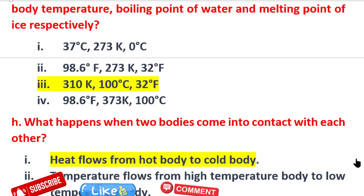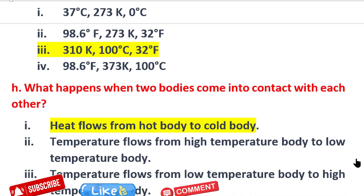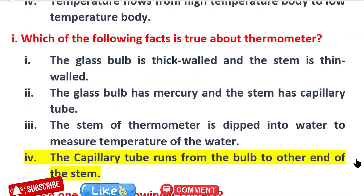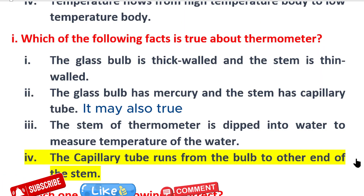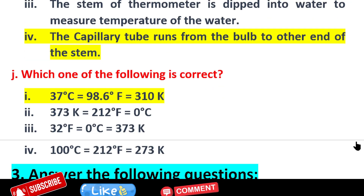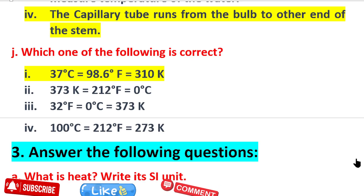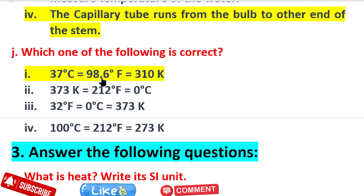What happens when two bodies come into contact with each other? Heat flows from the hot body to the cold body — that is very important. Which of the following facts is true about a thermometer? The right answer is option IV: the capillary tube runs from the bulb to the other end of the stem.